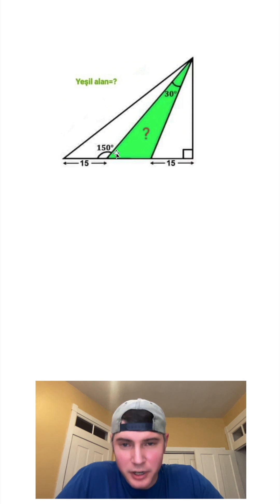This angle is 150 degrees right here, which means we have 30 left for this angle. And then 30 plus 30 is 60, which gives us 120 for this angle right here. And then since this is 120, that leaves us 60 for right here. And we have a 60 and a 90, which leaves us 30 for this angle up here.